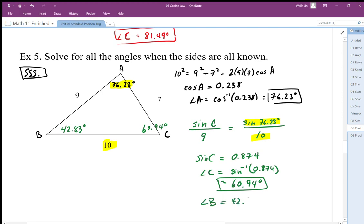So I just subtract from 180 degrees, so angle B is equal to 42.83 degrees. So those are my three angles. The first one using the cosine law, because I have side-side-side. The second one, I ended up using sine law.